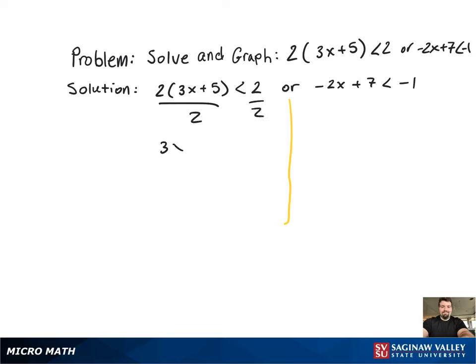Starting with the left-hand side, we're going to divide by 2 on both sides. Then we're going to follow simple algebra: subtract 5, then divide by 3. Now the left-hand side is solved for.